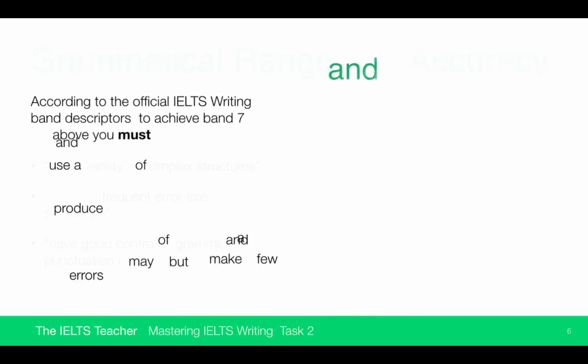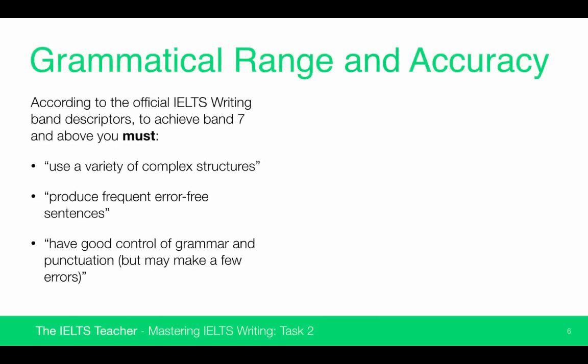Finally, that leaves us with grammatical range and accuracy — essentially grammar, range and accuracy, along with punctuation. To score band 7 and above in this area, you must use a variety of complex structures, produce frequent error-free sentences, and have good control of grammar and punctuation. Again, you may make a few errors.